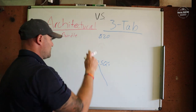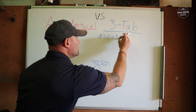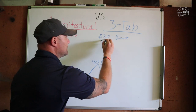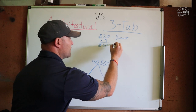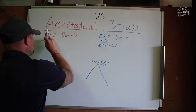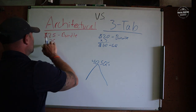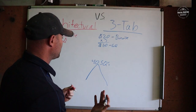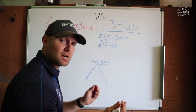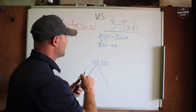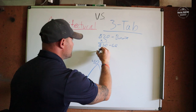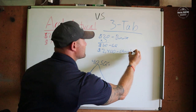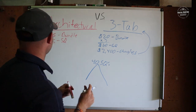You need three bundles to make a square, so multiplying gives us $60 per square for three-tab and $75 per square for architectural. We need 40 squares, and again, this is just the shingles — not your underlayment and accessories. So that comes out to $2,400 for three-tab shingles.